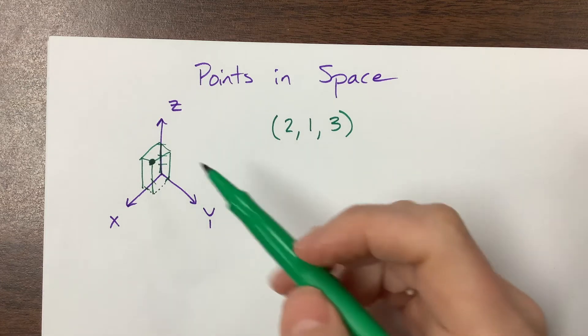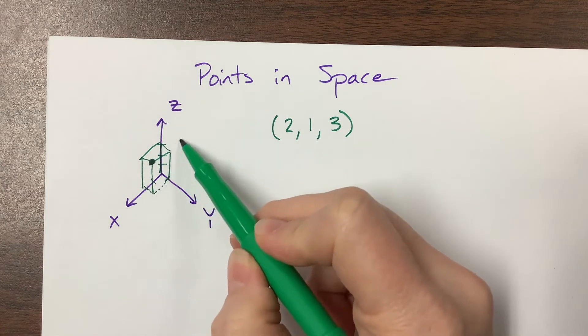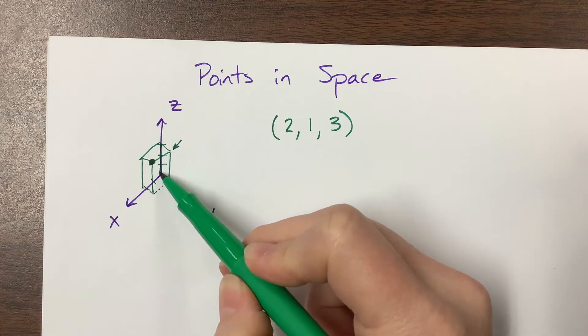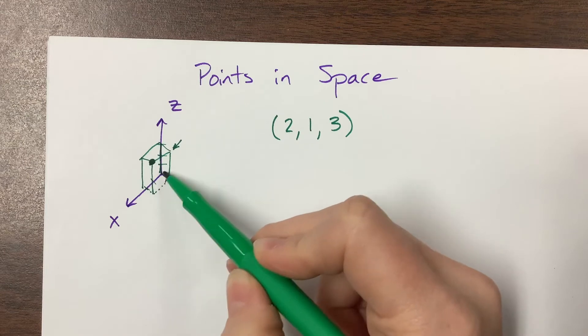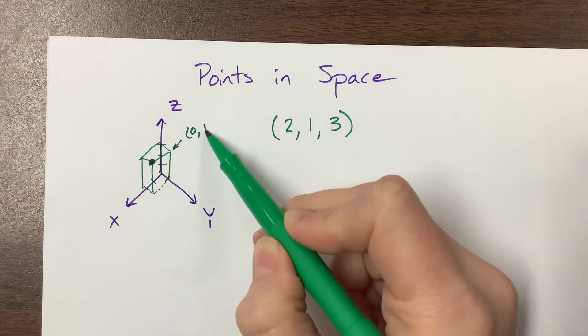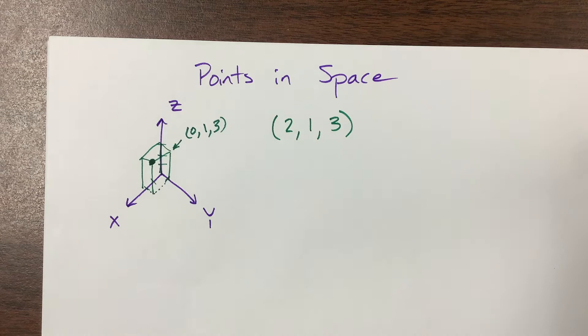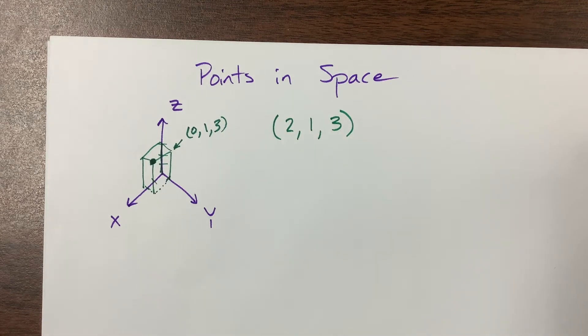So if I were to look at this point right here, we would have gone, we didn't do anything as far as the x value, the x would be 0, the y went 1 unit, and the z is 3. So that's the coordinate of that one right there.